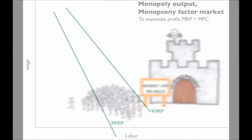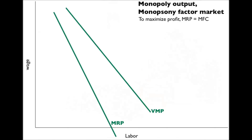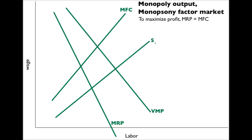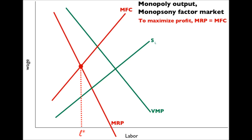We know what the marginal revenue product and the value of the marginal product look like. We also know what the supply of labor and the marginal factor cost look like. Remembering that the profit-maximizing rule for hiring is marginal revenue product equals marginal factor cost, we can see the amount of labor that will be hired: L-star.